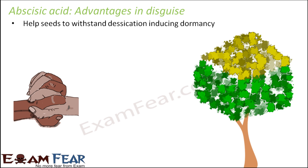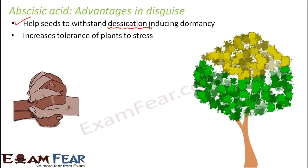It helps seeds withstand desiccation by inducing dormancy. When it makes the seeds dormant, the seeds try to adapt themselves to dry conditions — desiccation means dry conditions, where not much water is available. So the seeds develop tolerance to withstand dry conditions. Similarly, it increases the tolerance of plants to stress. Just as when your manager gives you a lot of stress, you still try to manage — maybe do some yoga or exercise to keep yourself calm and work hard — similarly, abscisic acid increases the tolerance of plants to stress, so that whenever the plant comes across any stressful condition due to external factors, it is able to tolerate that. So that means it is advantageous to the plants.